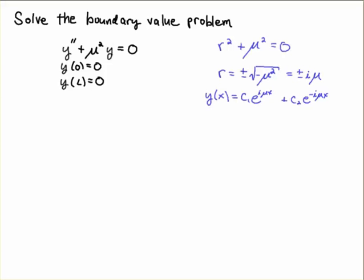First up we write the characteristic equation for this ODE and that's R squared plus mu squared equals zero. Notice that mu squared is going to be positive. I'm assuming mu is real. So that means that I have R is equal to plus or minus i mu.